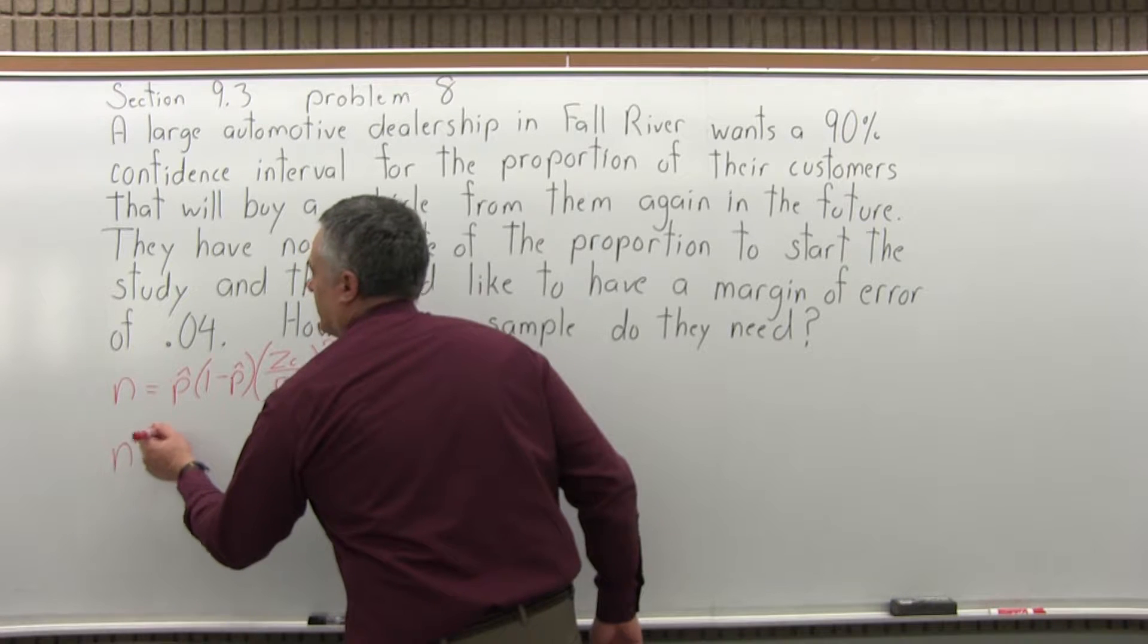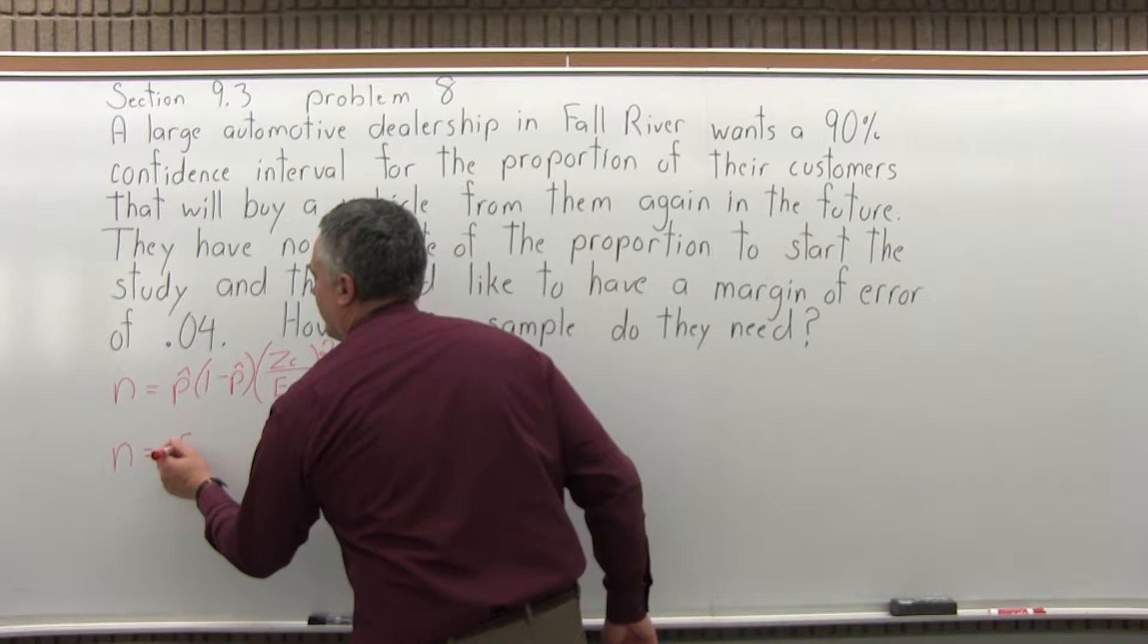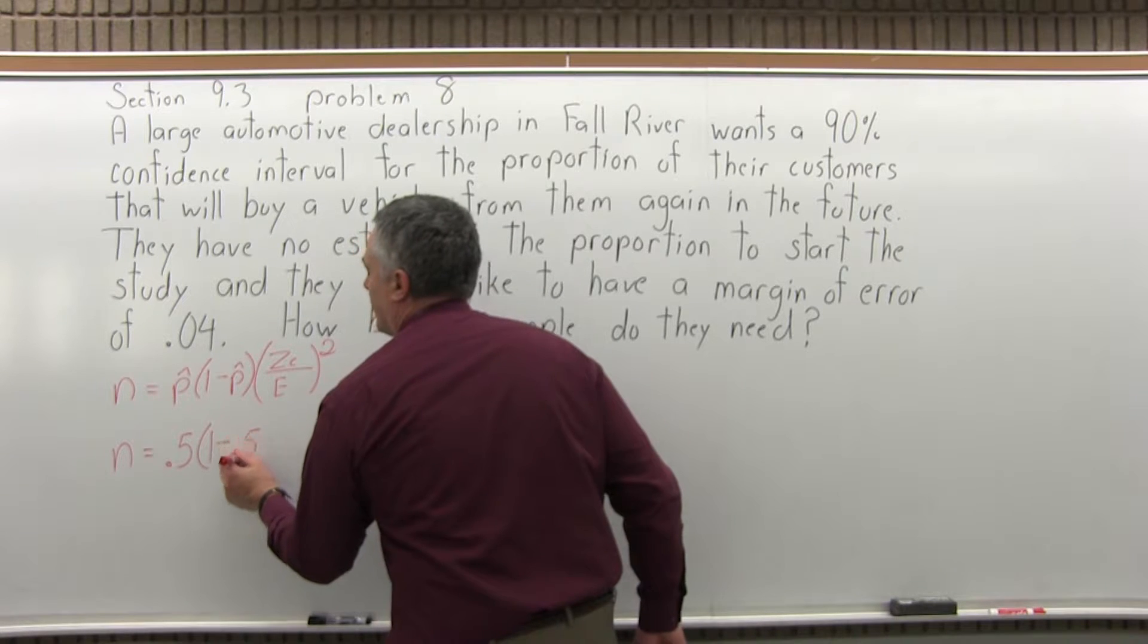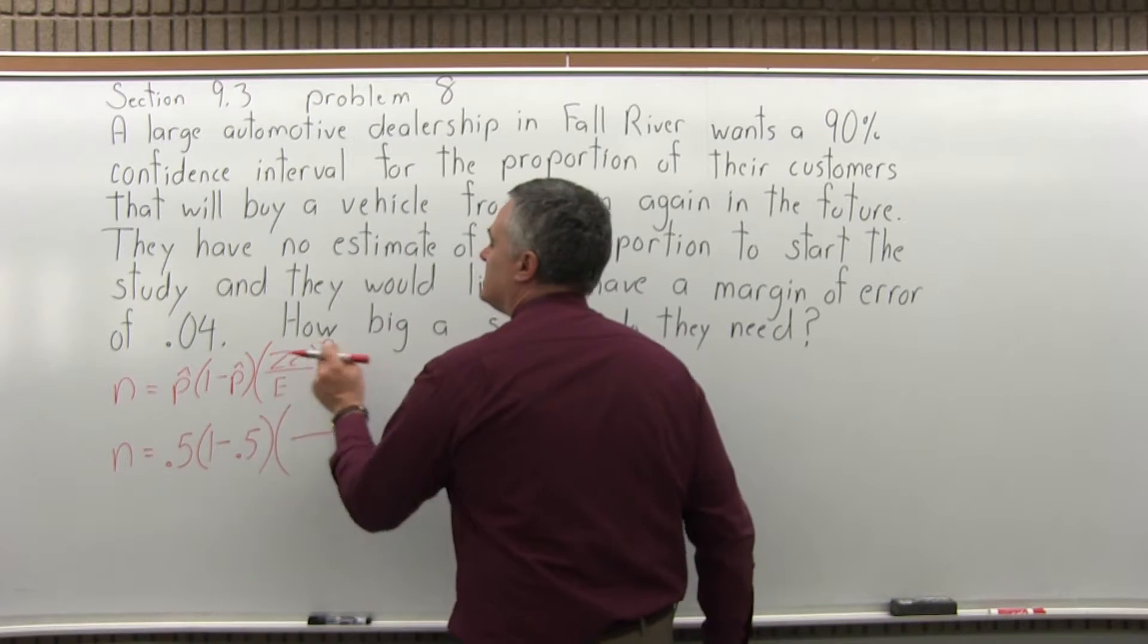So our formula will fill in p hat, we're going to use .5, times 1 minus p hat, so 1 minus .5, times z sub c.